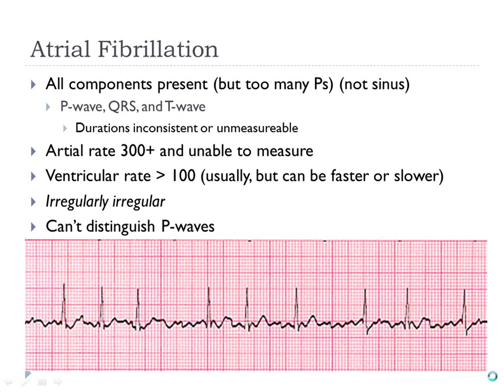So you've reviewed this already, but AFib is similar to AFlutter — it has a similar problem. With AFib, it's not as distinguishable as AFlutter. It's irregular. AFlutter is often regular, but AFib is usually irregular. You see these QRS complexes are at different distances from each other.